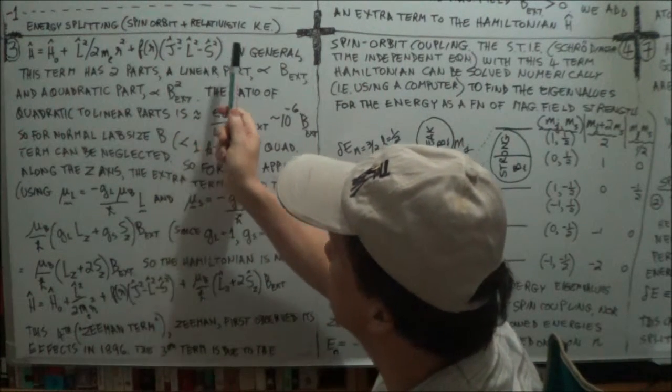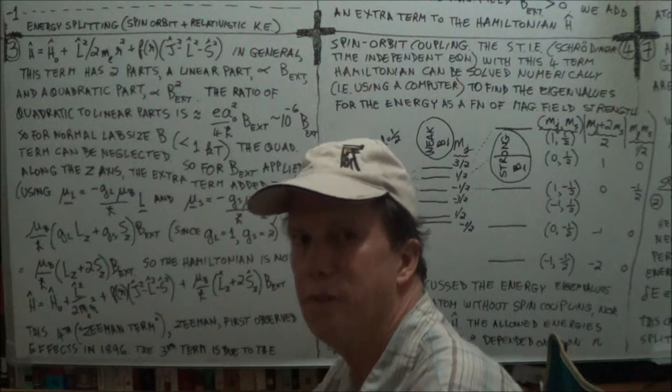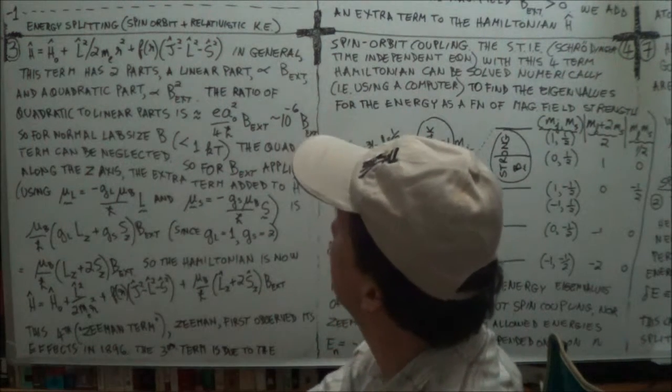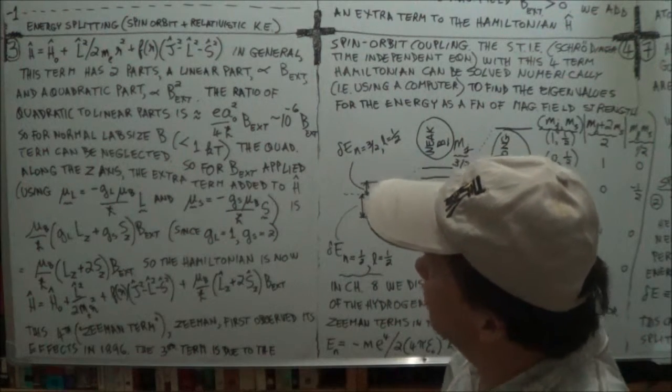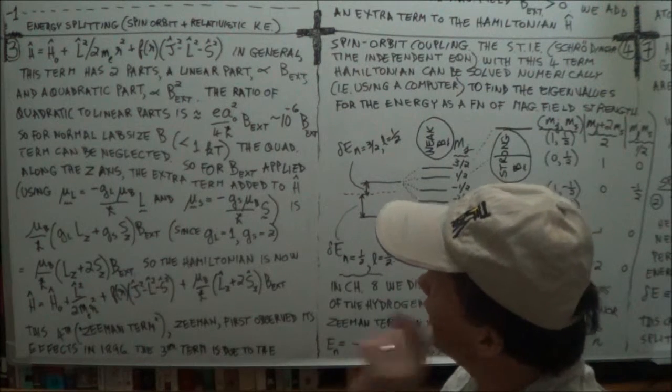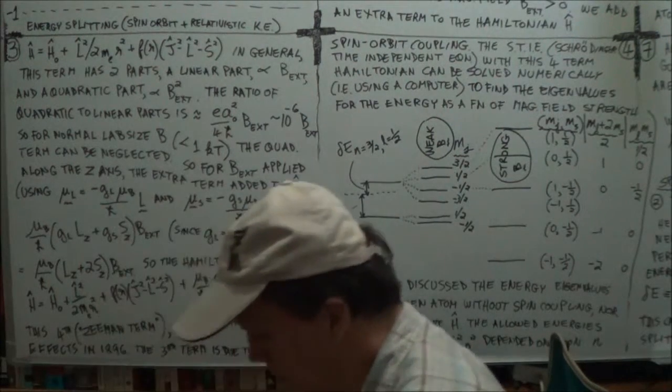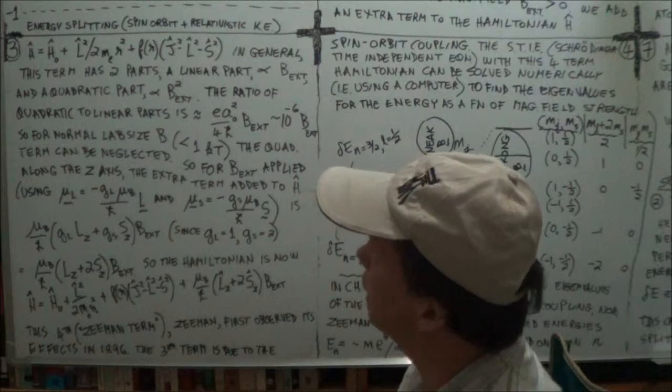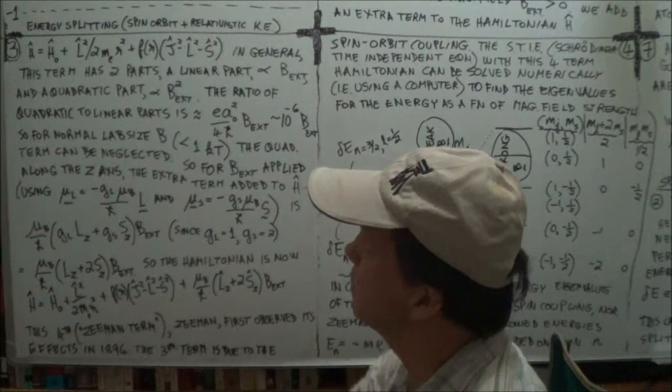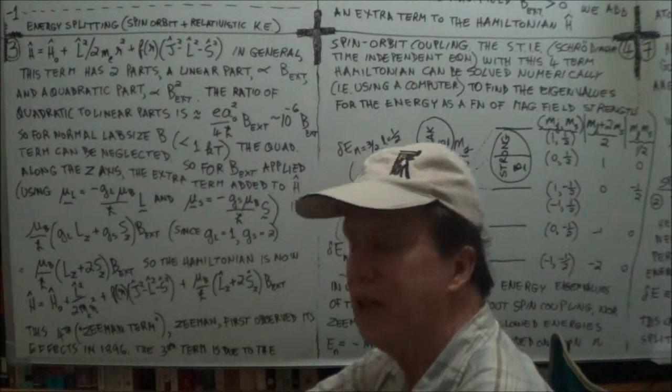Now we're going to perturb it by adding an extra term due to the presence of a magnetic field, the so-called Zeeman effect. This fourth term, this extra term, it works out when you do it in more detail that the text claims this fourth term has two parts, and both depended on the strength of the magnetic field.